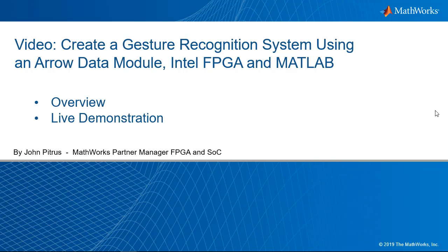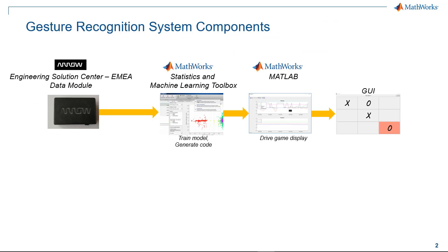First I'll go through an overview of how the system works and its components, and next I'll walk you through a live demonstration. Here's a simplified block diagram of the system, reading from left to right. On the left you see the Aero data module — a hardware solution put together by the Aero Engineering Solution Center in EMEA. That hardware takes movement and velocity data and streams that to host PC software. The first software module from MathWorks is called Statistics and Machine Learning — it takes the raw 2D data, trains a model, and generates code for how to work within the game. The model and the code are then used by MATLAB. MATLAB interprets position and velocity and determines what the next move in the tic-tac-toe game is and drives the GUI.